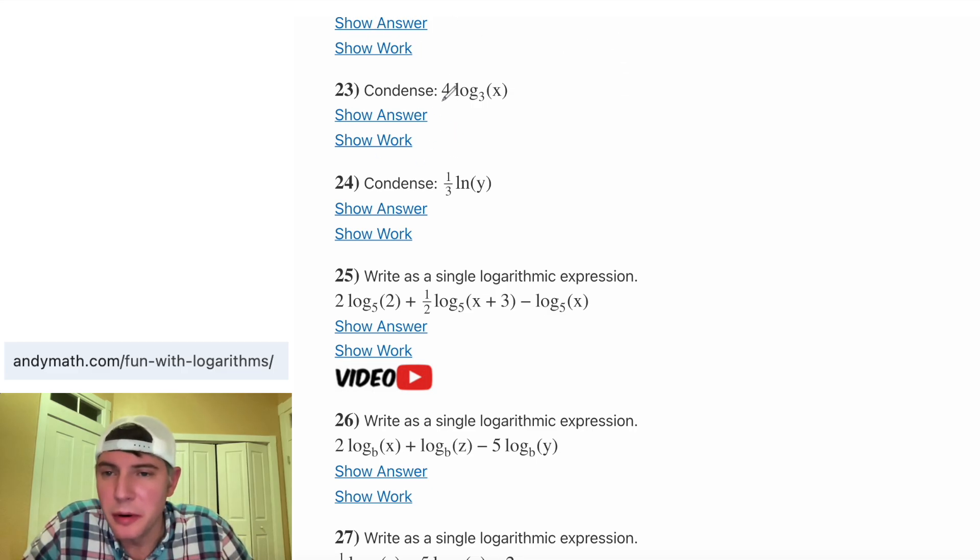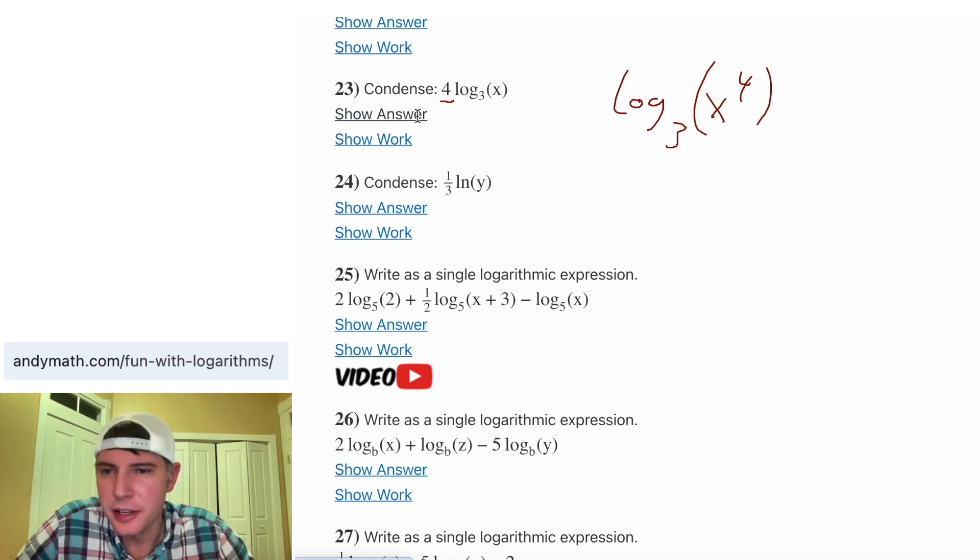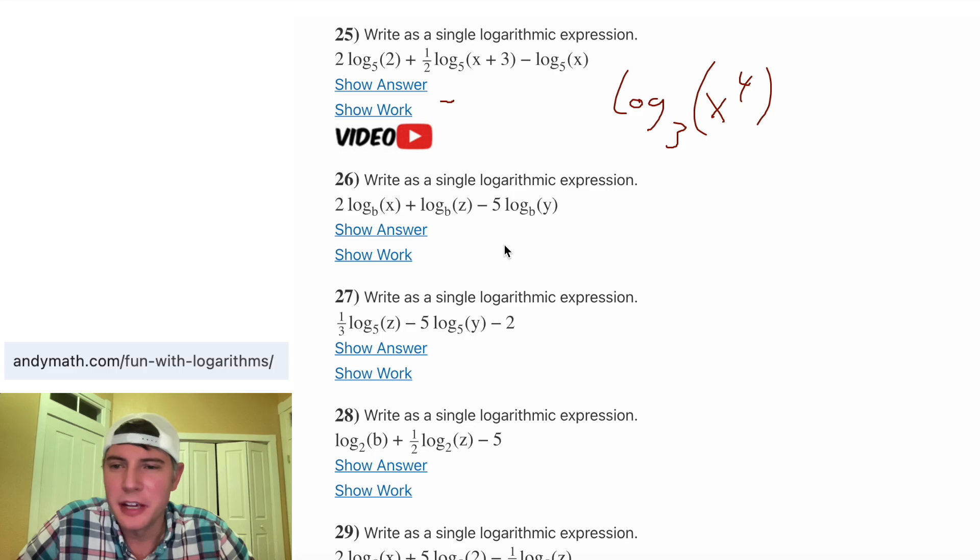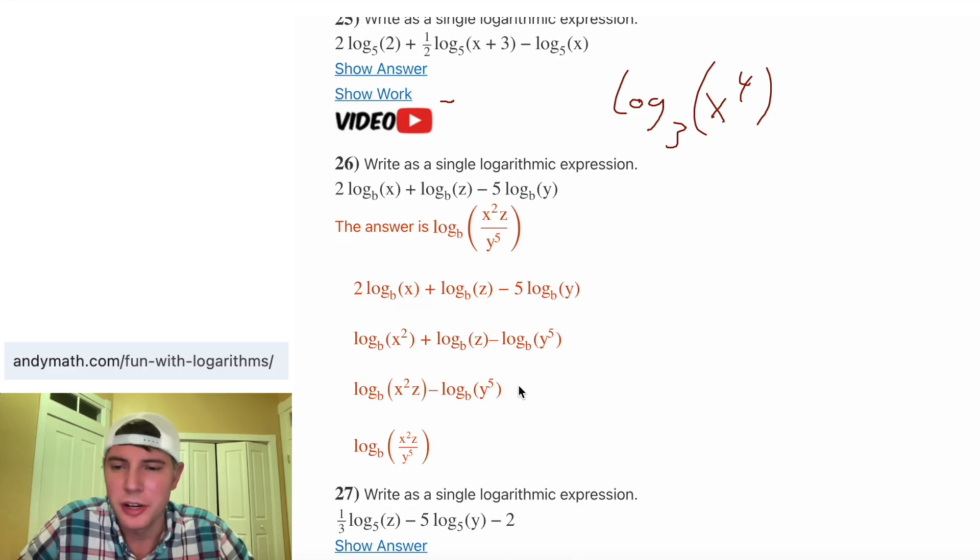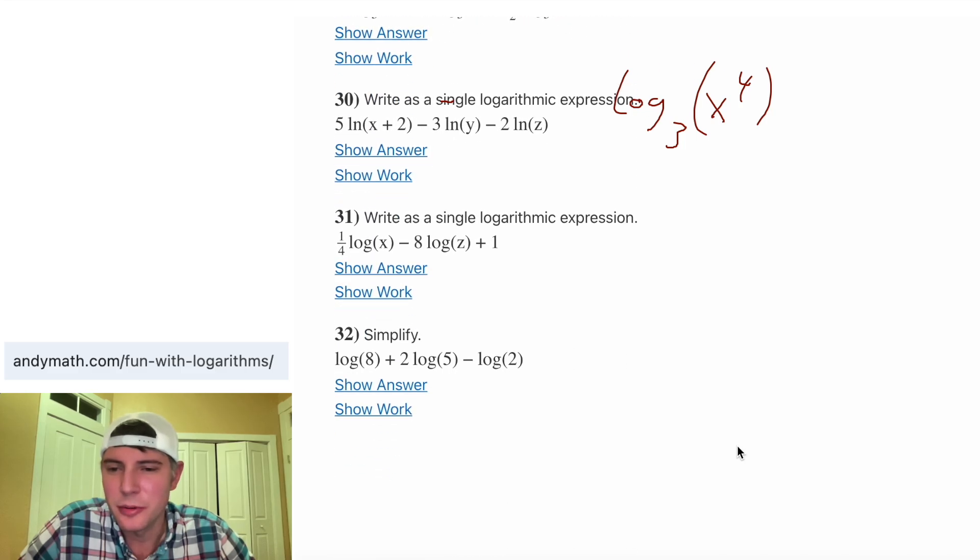Now last type is this 23 where we have a coefficient of 4 that can be brought up. So we can rewrite it as log base 3 of x to the 4 where the x is getting an exponent of 4. And we can click on show answer to check that and they match. And there's even more of these that are a little more complicated. And you can check your answer. And if you get stuck, you can look at show work and it shows every step. And there's a bunch of these you can go through.